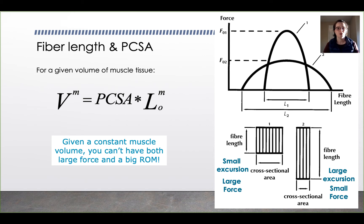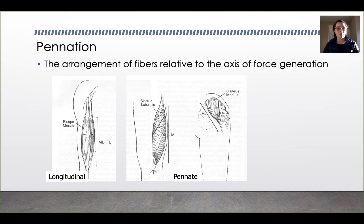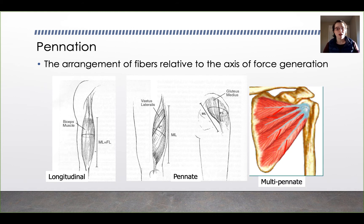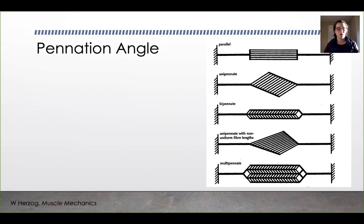There are ways to optimize muscle force within a small volume through pennation — the arrangement of fibers relative to the axis of force generation. A longitudinal pennation has fibers aligned along the axis of force generation; the biceps is an example. Pennate muscles have fibers oriented at an angle to the axis of force generation — the vastus lateralis and gluteus medius are examples. Multi-pennate muscles have multiple fiber angles. The pennation angle alpha is defined as the angle between the tendon line of pull and the fibers, and tendon force is estimated as Fm times cosine of alpha.